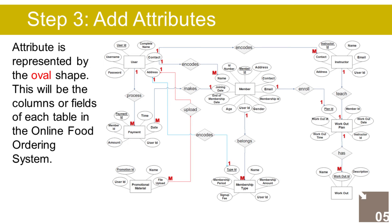The Payment entity has the following attributes: ID (Primary Key), order ID (Foreign Key), amount paid, date, and processed by (Foreign Key). The Order entity has the following attributes: ID (Primary Key), customer ID (Foreign Key), order date, and total amount. The Order Details entity has: order ID (Foreign Key), menu ID (Foreign Key), amount, number of servings, and total amount.